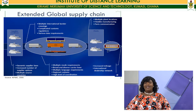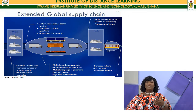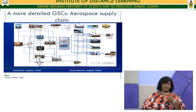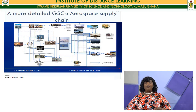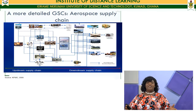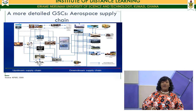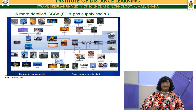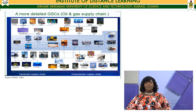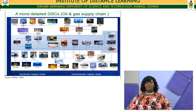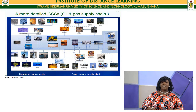An integrated logistics system is a sure way to overcome the many difficulties and build strong capability to take advantage of the numerous opportunities in the global marketplace. Looking at the aerospace supply chain, there are many more parties involved beyond local players — many parties located in different parts of the world both upstream and downstream. This necessitates building an integrated logistics network to achieve a seamless flow. Similarly, the oil and gas supply chain on a global level shows even more complexity, making an integrated system essential.